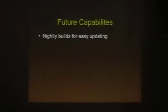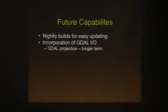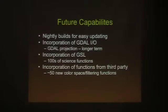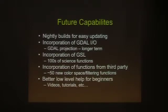For future capabilities, we're looking at a built-in easy updating system so you can always grab the newest latest version. Something we're really excited about is the incorporation of GDAL, using DaVinci as a front end for GDAL manipulation — both reading and writing as well as spatial transformations, warping, and different kinds of things like that. We're also looking at the incorporation of the GNU Science Library, which is hundreds of science functions — that's longer term. And we just had a third-party contributor add about 15 new functions, plus of course better documentation, which is always a plus.